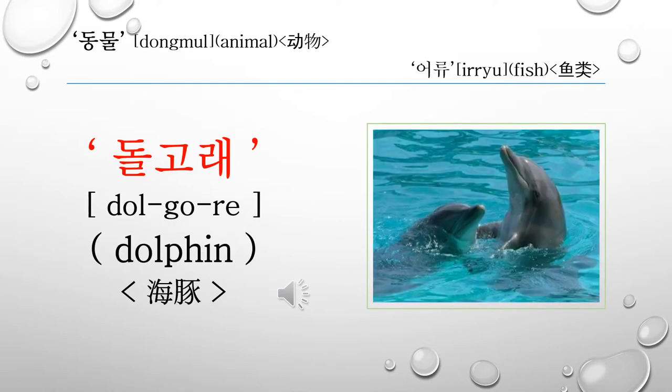This word is 돌고래. 돌고래 is called a dolphin in English and it is called 海豚 in Chinese. Let's read it again: 돌고래.